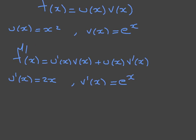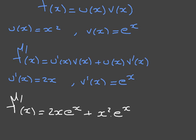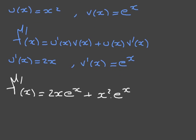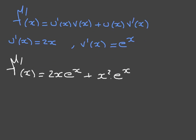Using all of this, we replace each expression: u'(x) by 2x, v(x) by eˣ, u(x) by x², and v'(x) by eˣ. This leads us to f'(x) = 2x · eˣ + x² · eˣ. We've differentiated the function. If we wanted to, we could factorize this and write f'(x) = (2x + x²) · eˣ as our final answer.